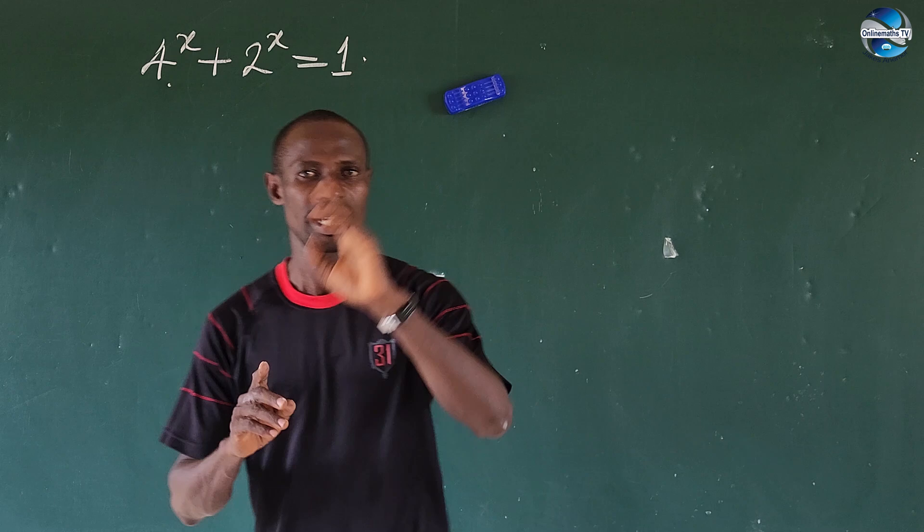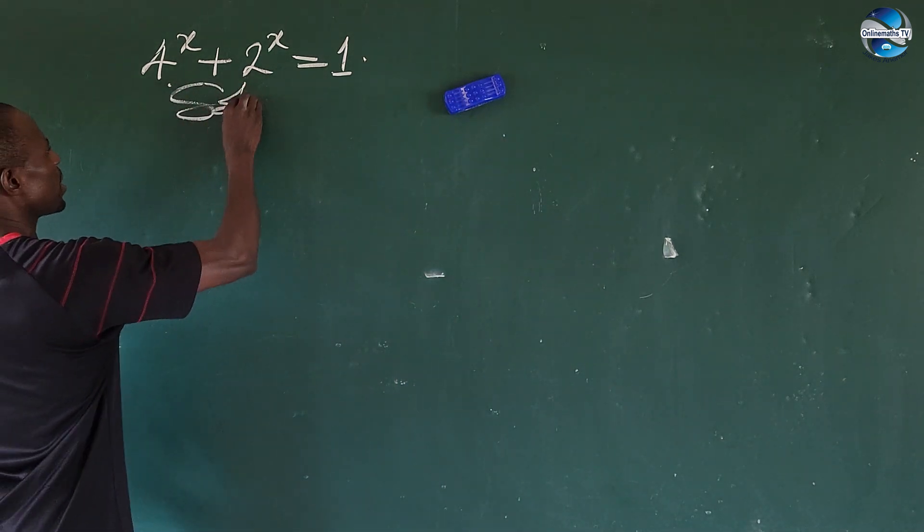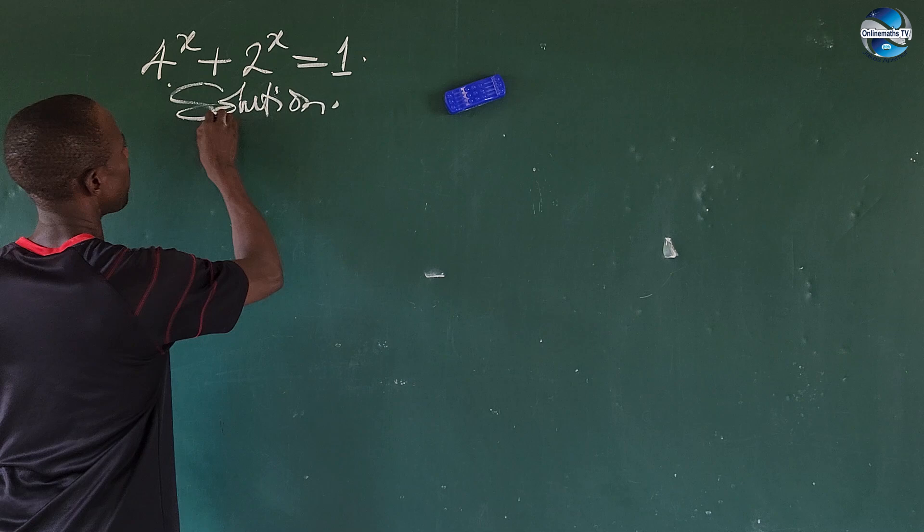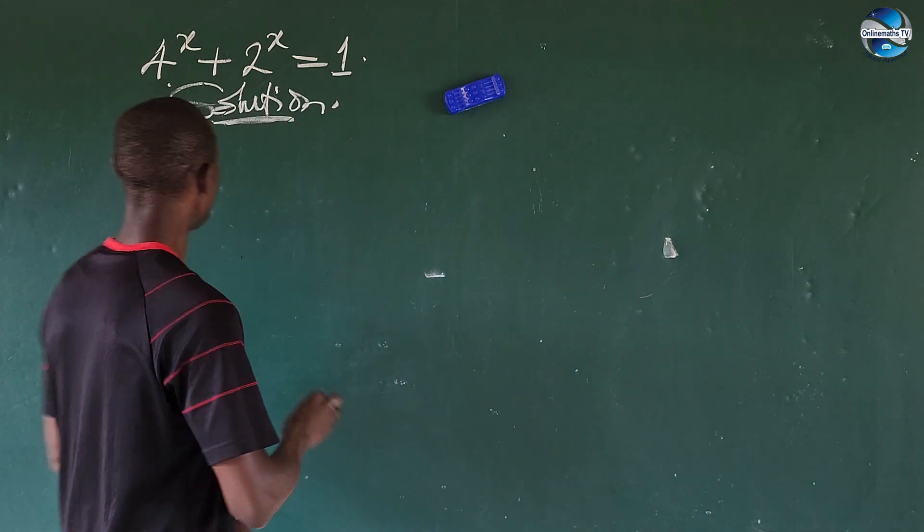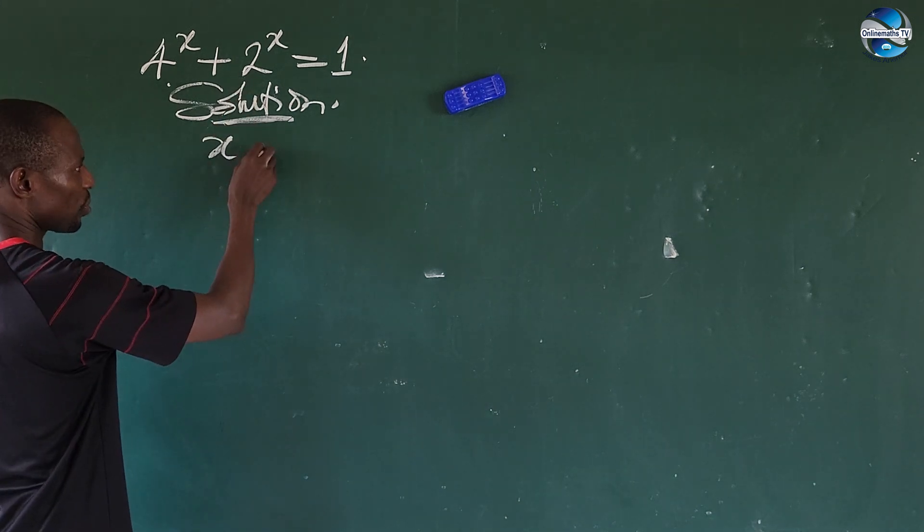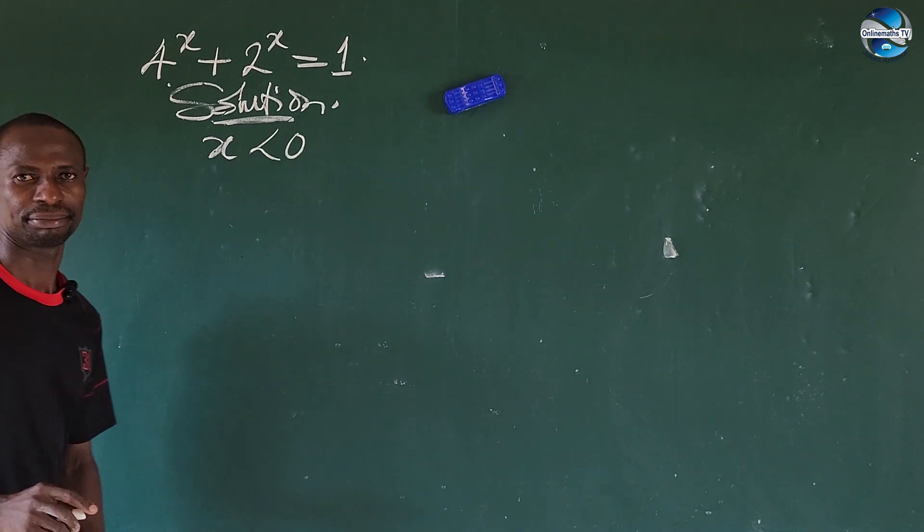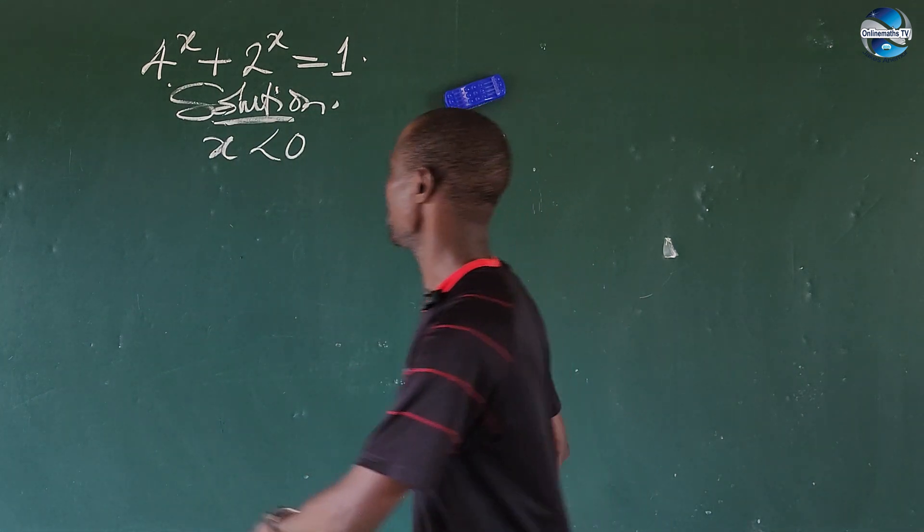What would be the value of x? Now if we look at this question carefully you'll discover that our x will be less than zero. So x from here is less than zero. So if x is less than zero, how do we get our x now?